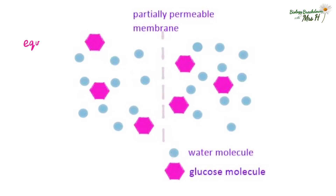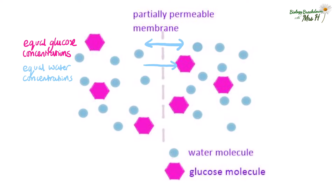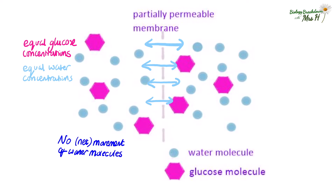Both sides have the same glucose concentration. This also means that the water concentration on both sides of the partially permeable membrane are also the same. Although water molecules may pass back and forth across the membrane, there is no overall movement of water molecules. If the water concentrations are the same either side of a membrane, there will be no osmosis.